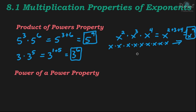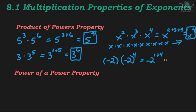One more example of this property: negative 2 times negative 2 to the 4th power. Remember, a number with no exponent has an invisible 1 there. So we have negative 2 to the 1 plus 4, which equals negative 2 to the 5th power. You can write that with parentheses to make it clear that it's negative 2 to the 5th power.